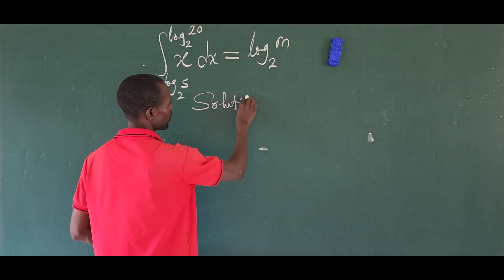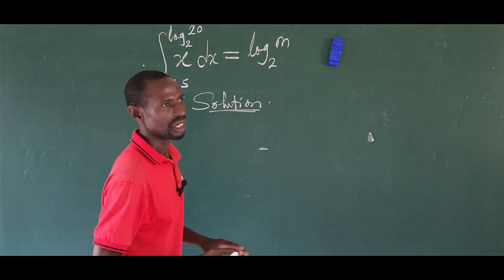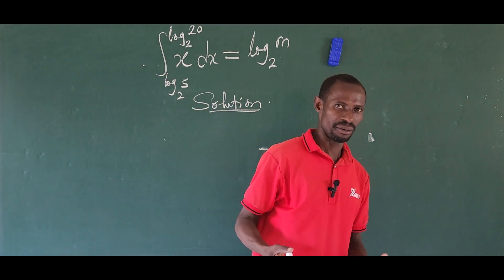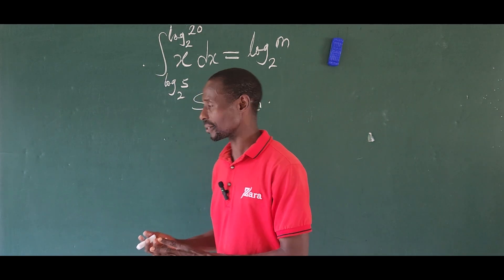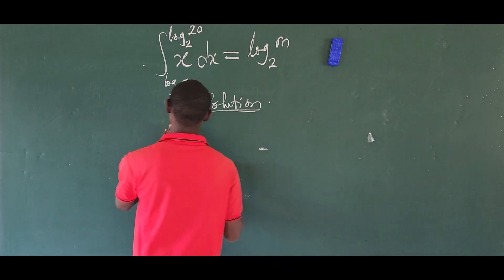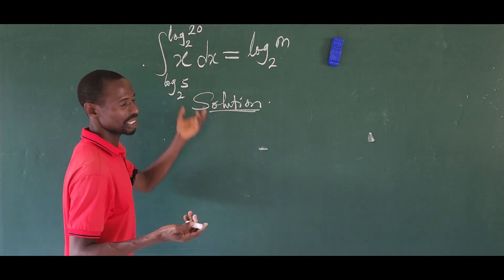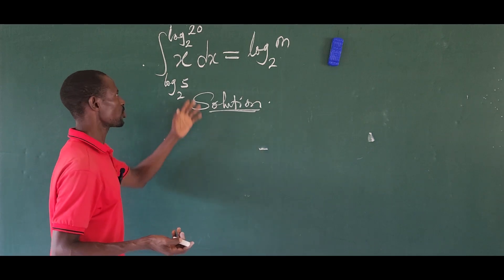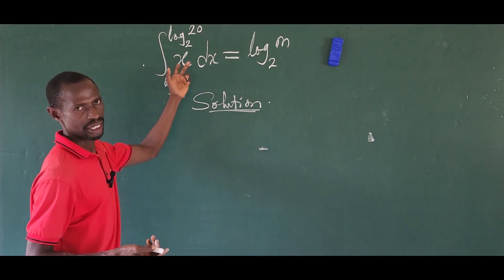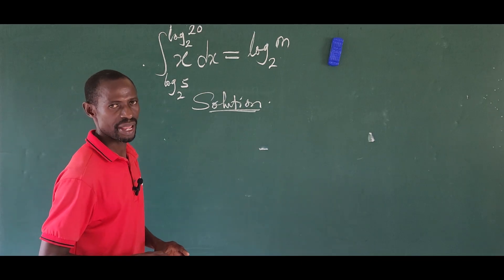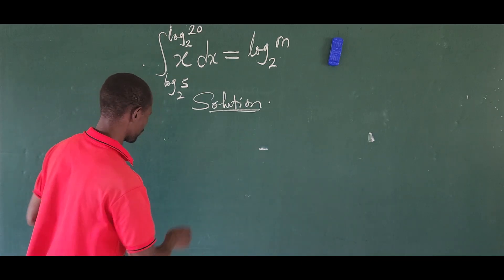We're going to follow some simple steps in integration and logarithms, and apply some laws of integration and logarithms to solve this. Without rewriting the question, we first integrate x within the limits. We know that integrating x gives us x to the power of 2 over 2.